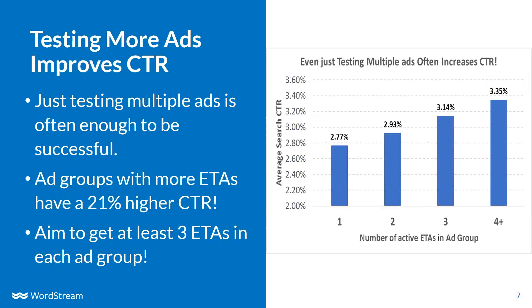Just by testing more ads within an ad group, we very often see an increased click-through rate. I did this research earlier this year, looking across 18,000 accounts at the number of ETAs in each ad group. We see that people who are actively testing more — testing different messages, different calls to action, different offers and promotions — allow Google to serve these ads better to people looking for slightly different products. Ad groups with three or four ETAs have a 21% higher click-through rate than ad groups with only one ETA.